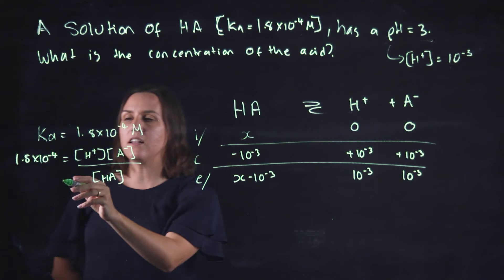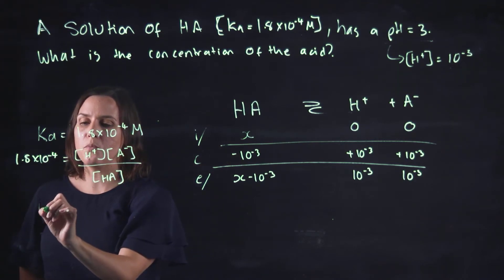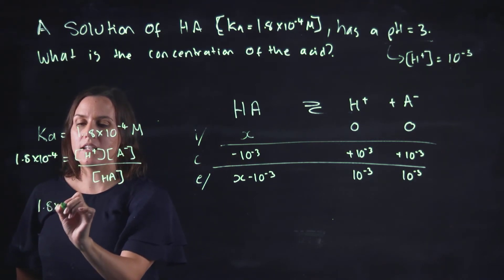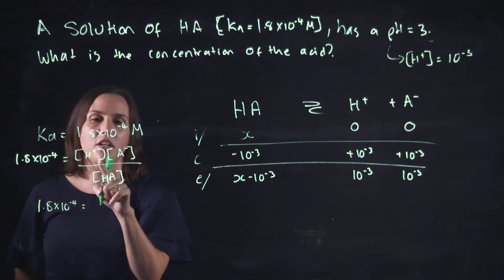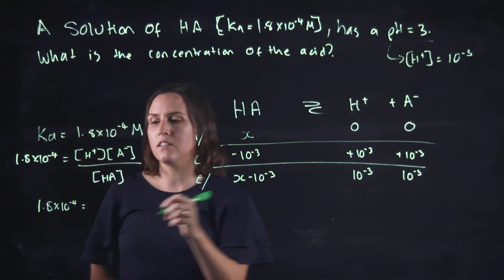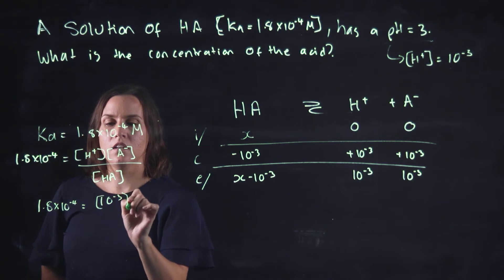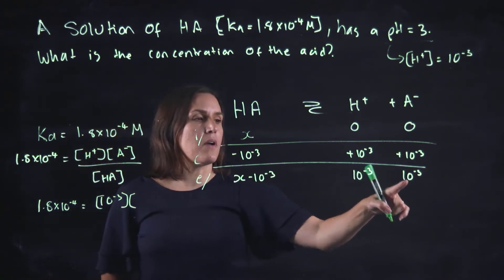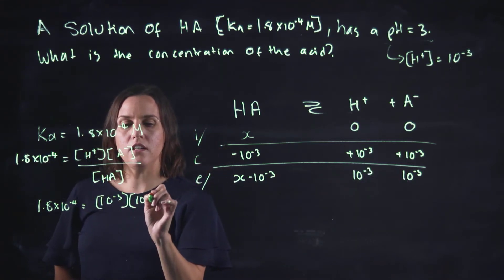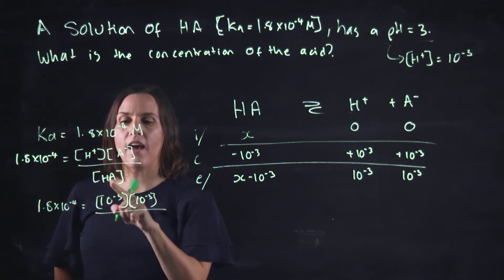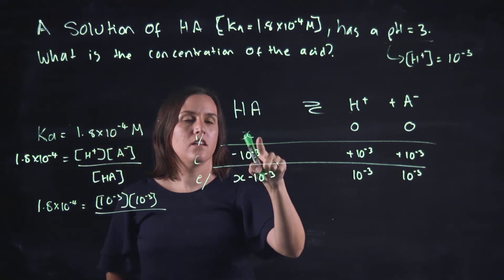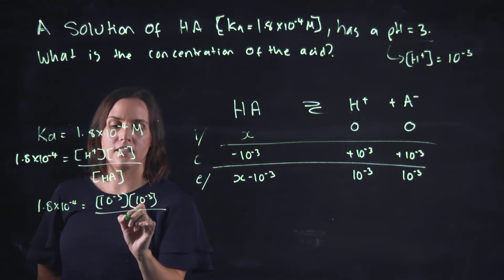So when we write it in here, we can go 1.8 by 10 to the minus 4. What do we know? We know our H+, 10 to the minus 3. We know our A-, 10 to the minus 3. And our HA, we can put down as X there.